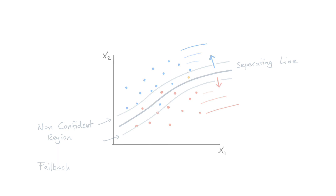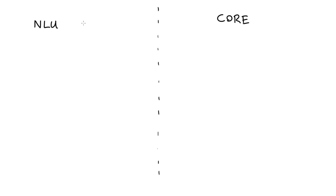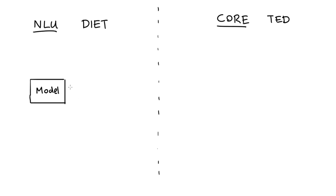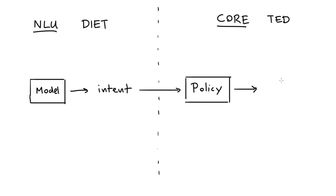So let's briefly discuss the Rasa pipeline one more time. Taking a big step back, there are two main parts that decide the next action in a conversation: the natural language understanding part on the left, and the core part on the right. As an example, DIET is an algorithm we typically use inside the NLU pipeline to predict the intent a user has. And on the core side we have TED to predict the next action.